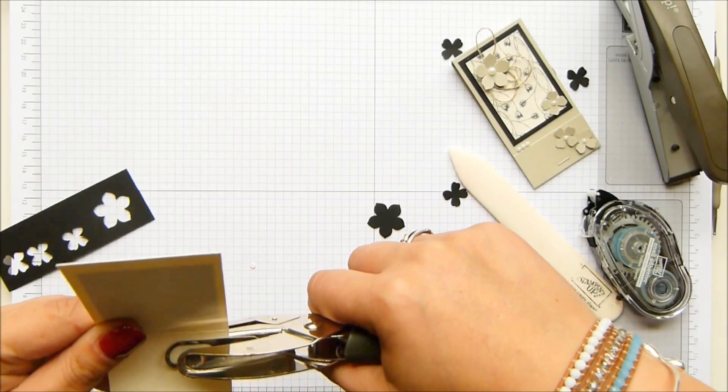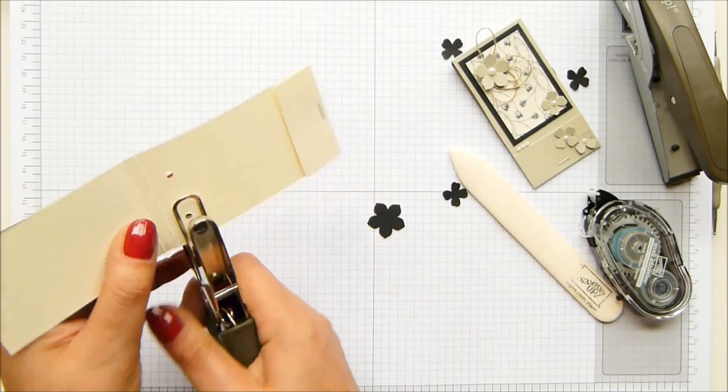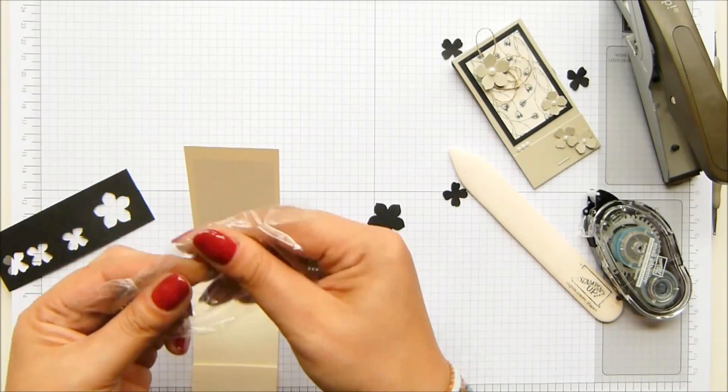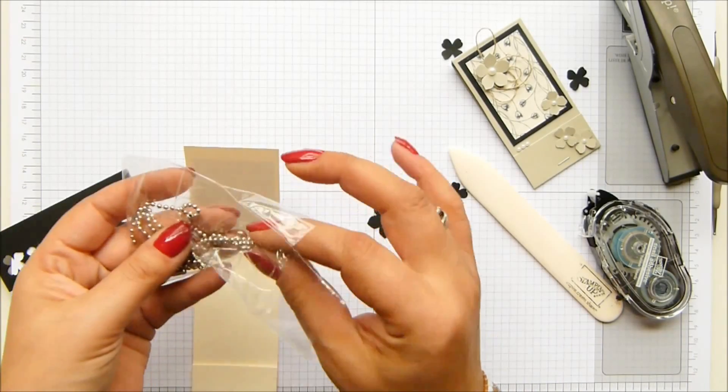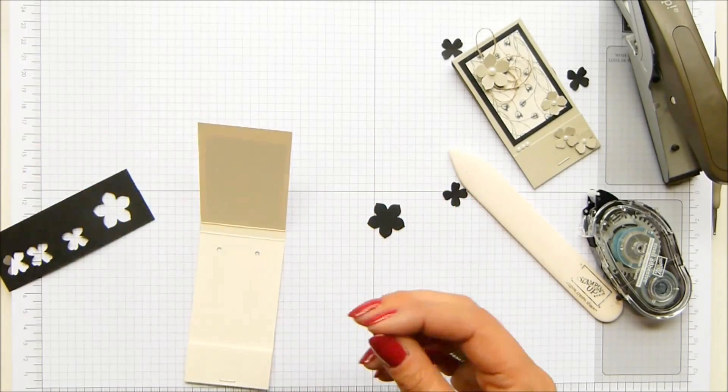And just poke two holes, punch two holes in the back. These are, I don't know what the technical term is. I call them snake keychains because they're like snakes, but they're like your bath plug, basically.